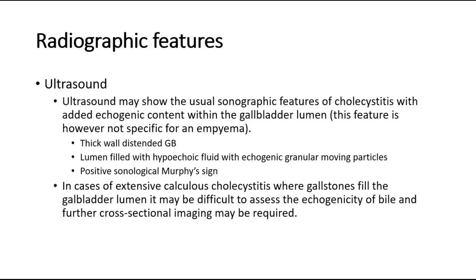For radiographic features, ultrasound may show the usual sonographic features of cholecystitis with added echogenic content within the gallbladder lumen. This feature is however not specific for an empyema. Features seen on ultrasound include thick-walled distended gallbladder, lumen filled with hypoechoic fluid with echogenic granular moving particles, and a positive sonological Murphy's sign. In cases of extensive calculus cholecystitis where gallstones fill the gallbladder lumen, it may be difficult to assess the echogenicity of bile and further cross-sectional imaging may be required.